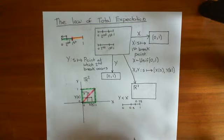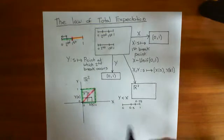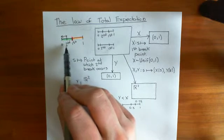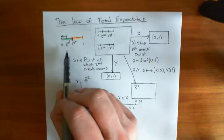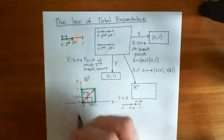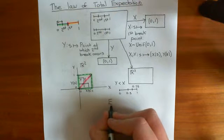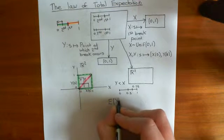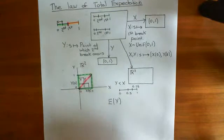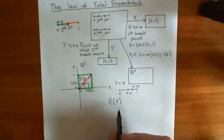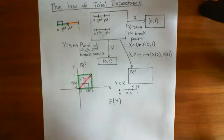Now what we want to do — this is the problem — what we wanted to be able to find was the expected value of the second breakpoint. So what we actually want, what we're actually trying to get, is the expected value of the random variable y. And we are going to attack it using the law of total expectation.